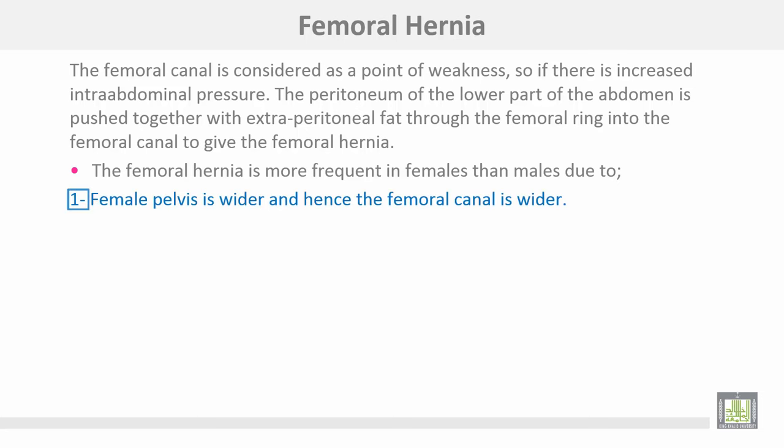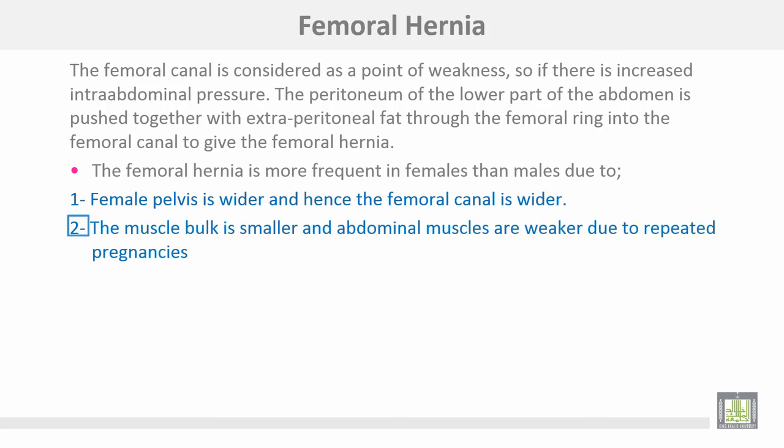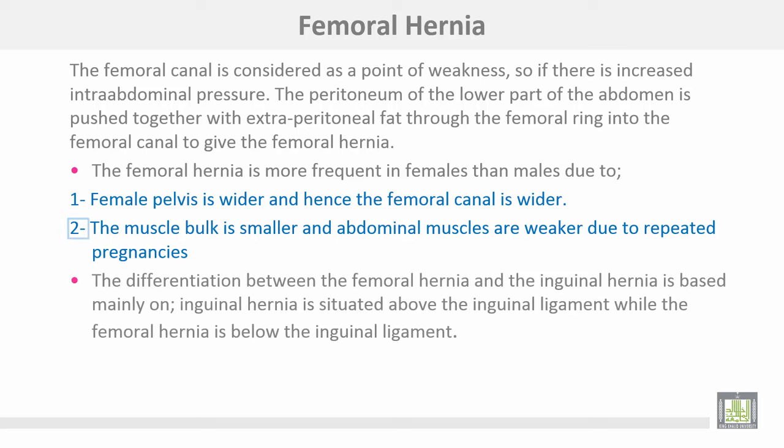The femoral hernia is more frequent in females than males because the female pelvis is wider and hence the femoral canal is wider. Also, the muscle bulk is smaller and the abdominal muscles are weaker due to repeated pregnancies. Differentiation between femoral hernia and inguinal hernia: the inguinal hernia is situated above the inguinal ligament, while the femoral hernia lies below the inguinal ligament.